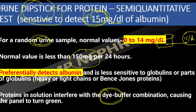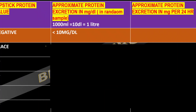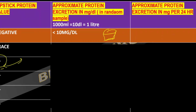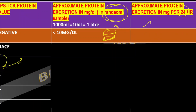One important question is: what is the quantification for the dipstick? Suppose the patient has 1+ proteinuria — what does that mean quantitatively? The quantification comes in two forms: the approximate amount of protein present in the collected sample, and the approximate amount the patient is excreting over a 24-hour period. This distinction often creates confusion in exams.